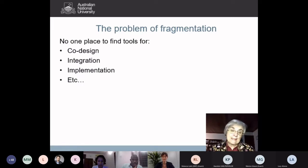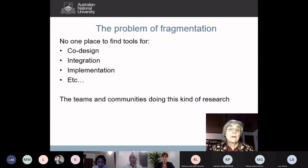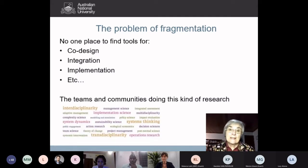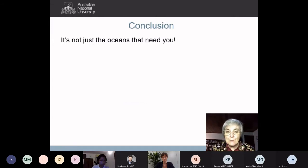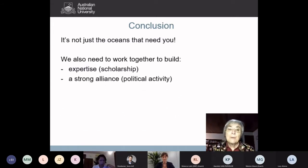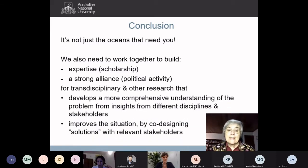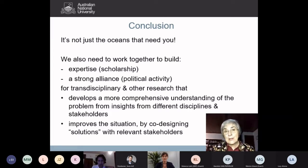I want to finish by talking about the problem of fragmentation — there's no one place to find all the tools you need for co-design, integration, or implementation. The teams and communities doing this kind of research are also not unified: it's not just transdisciplinarians, but interdisciplinarians, systems thinkers, action researchers, operations researchers — a whole range of different communities working on different kinds of problems. It's not just the oceans that need you. It's not just your research findings that are important — it's also the process. It would be great to work together to build expertise, scholarship, and a strong alliance to lobby for transdisciplinary research that builds comprehensive understanding by bringing together disciplines and stakeholders, and that helps improve the situation by co-designing solutions.